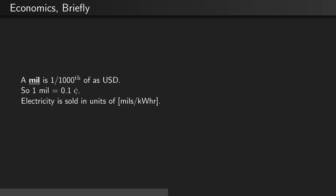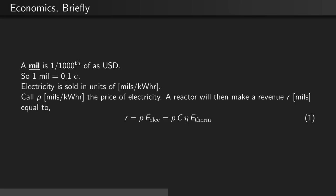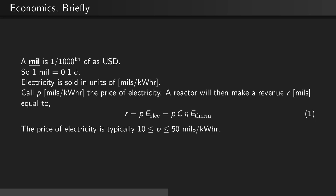A mill is one one-thousandth of a US dollar, so a mill is equal to one-tenth of one cent. Electricity happens to be sold in units of mills per kilowatt hour. Let's call P in mills per kilowatt hour the price of electricity. A reactor will then make a revenue R in mills equal to P times the electric energy, or P times the capacity factor times the thermal efficiency times the thermal energy. The price of electricity is typically 10 to 50 mills per kilowatt hour.